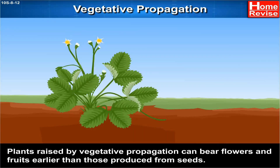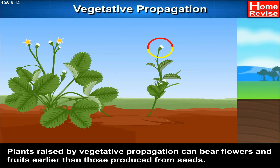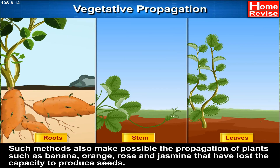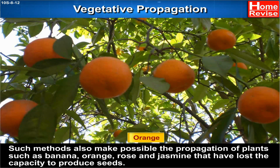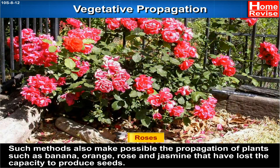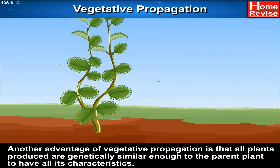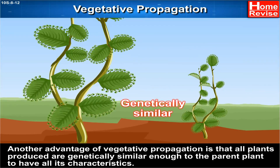Plants raised by vegetative propagation can bear flowers and fruits earlier than those produced from seeds. Such methods also make possible the propagation of plants such as banana, orange, rose, and jasmine that have lost the capacity to produce seeds. Another advantage of vegetative propagation is that all plants produced are genetically similar enough to the parent plant to have all its characteristics.